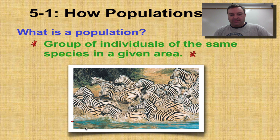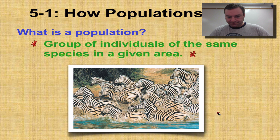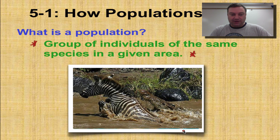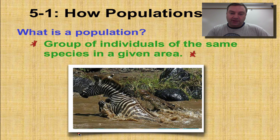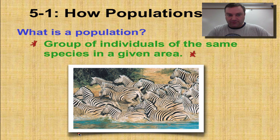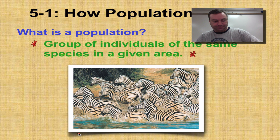As you look at this picture, this is a population of zebras on their migration, crossing a body of water that's probably filled with crocodiles. So somewhere in here you would have a population of crocodiles trying to eat the zebras — that's predation, which we covered in a previous series of screencasts.